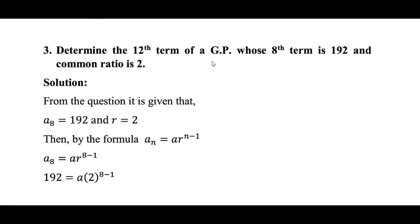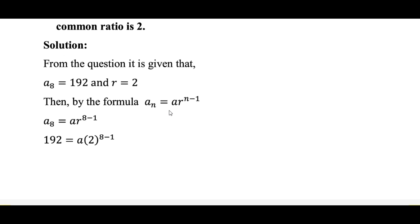Determine the 12th term of a GP whose 8th term is 192 and common ratio is 2. So A8 is equal to 192, and the common ratio R is equal to 2. We will use the formula for a geometric progression to find a particular term: AN is equal to A times R to the power n minus 1.